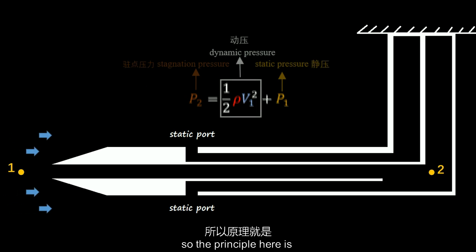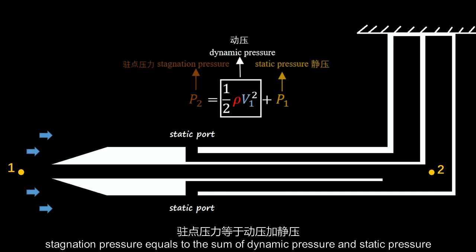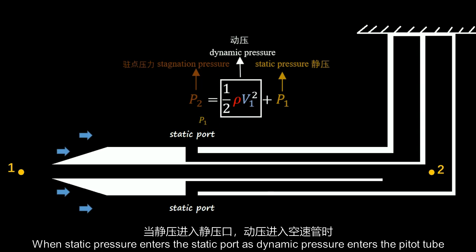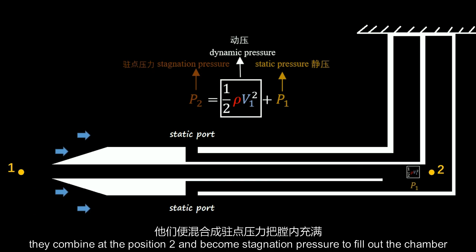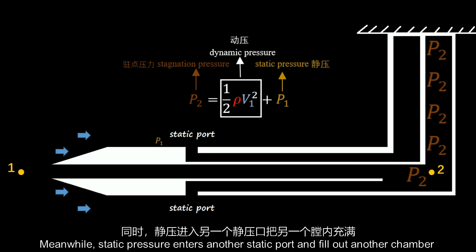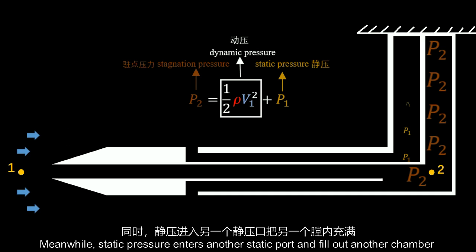The principle here is that stagnation pressure equals the sum of dynamic pressure and static pressure. When static pressure enters the static port and dynamic pressure enters the pitot tube, they combine at position 2 and become stagnation pressure to fill the chamber. Meanwhile, static pressure enters another static port to fill another chamber.